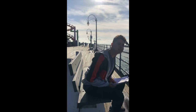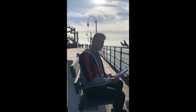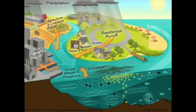You guys want to know what dead zones are? I'll tell you what dead zones are. According to the National Oceanic and Atmospheric Administration, dead zones refer to a reduced level of oxygen in the water. Less oxygen dissolved in the water is often referred to as a dead zone because most marine life either dies or, if they're mobile, such as fish, leave the area.